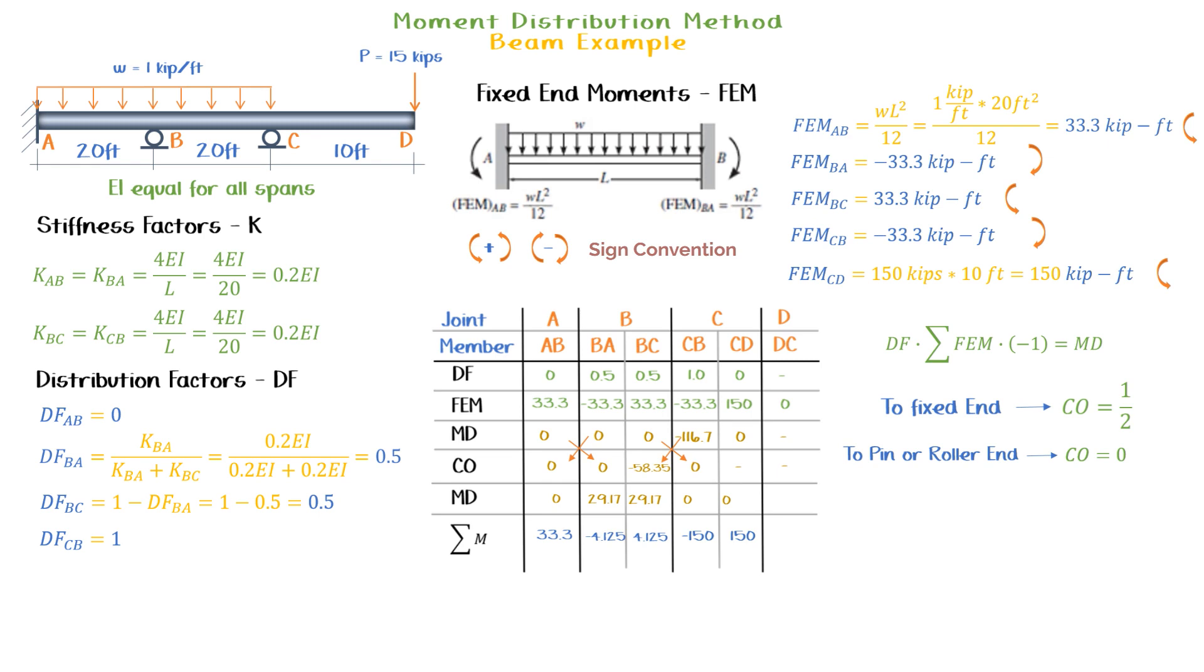Next, I like to draw a diagram to show the different beam spans with its corresponding moments. Finally, from the diagram, we can see that the moment at point C is 150 kips feet.